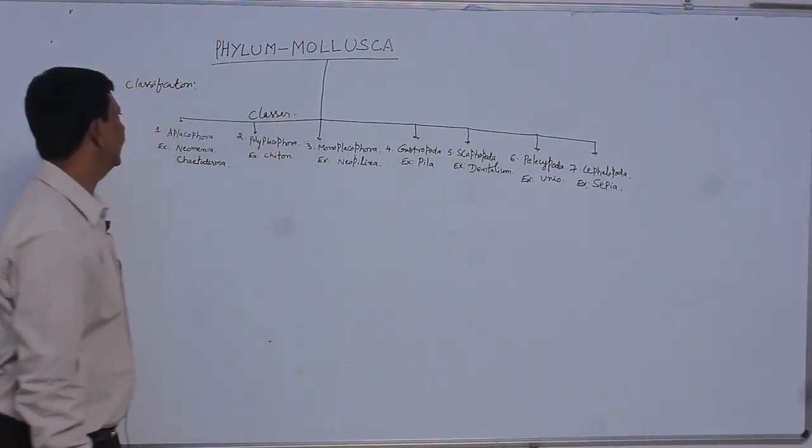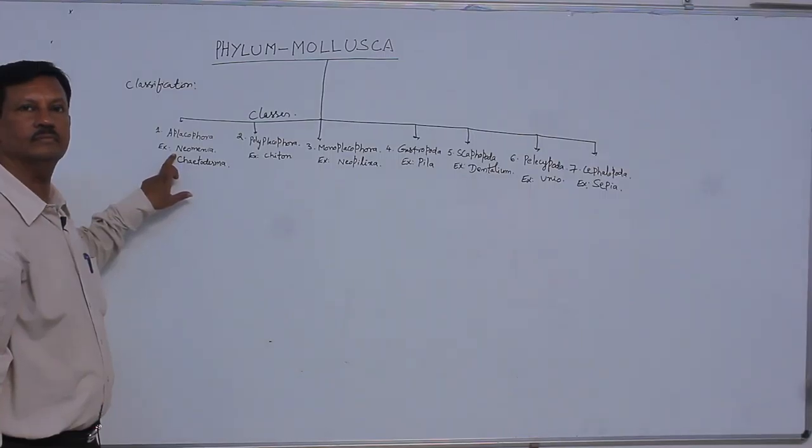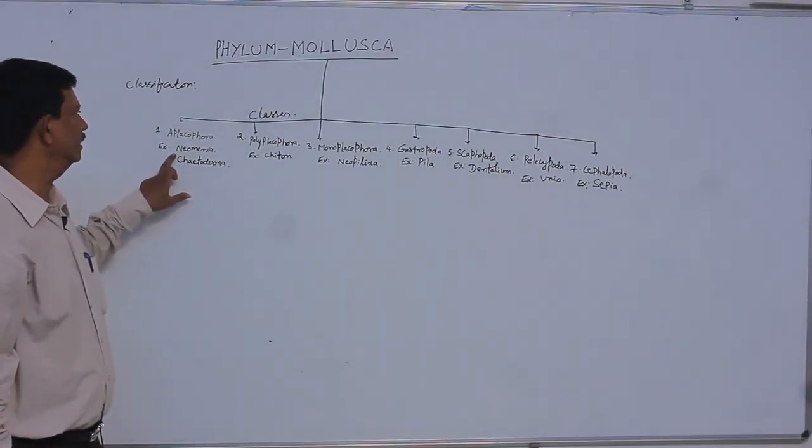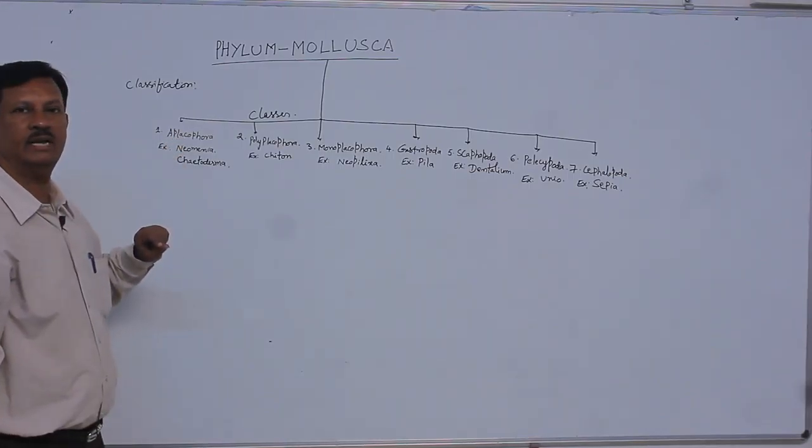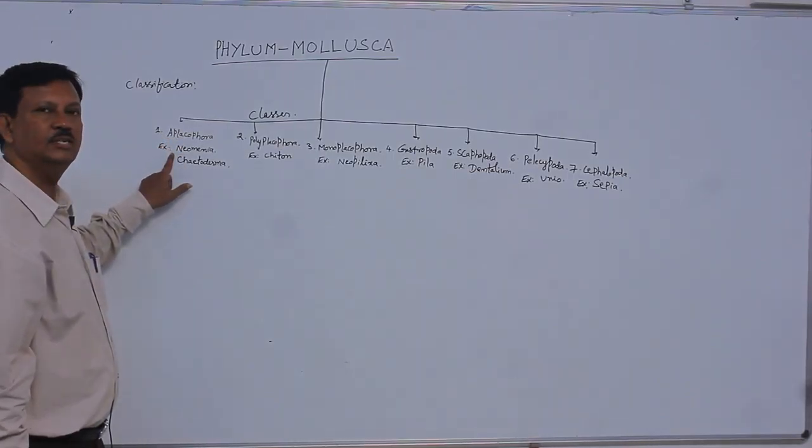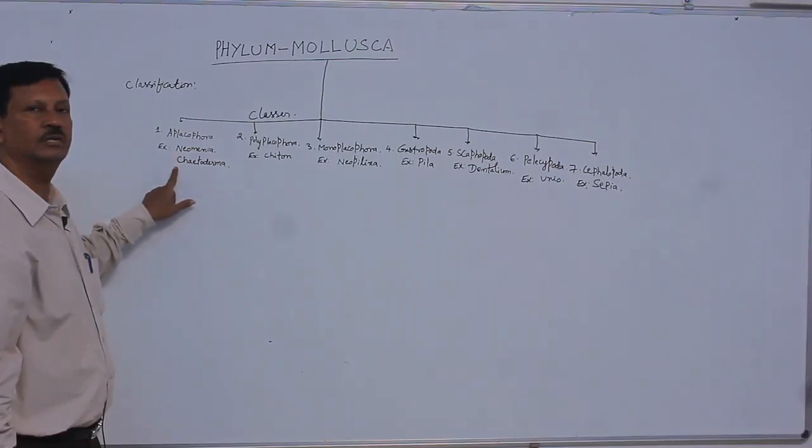They are A-Lactophora. A means shell is absent. Due to the absence of skin, the class name is derived as A-Lactophora. Example is Neomynia and Chitoderma.